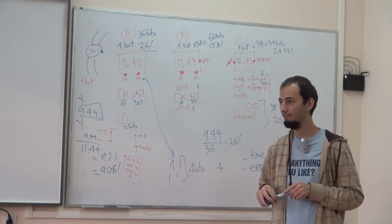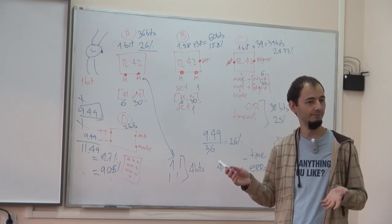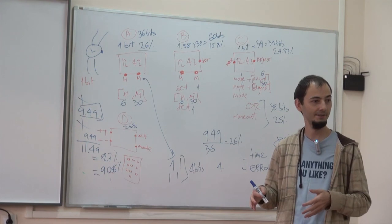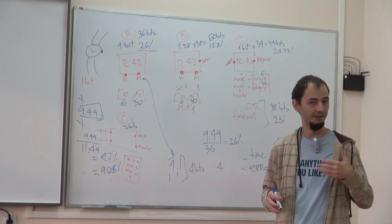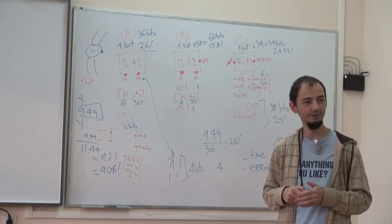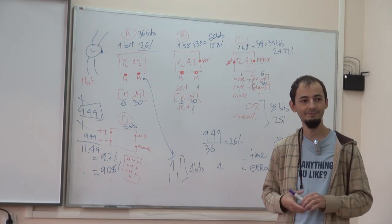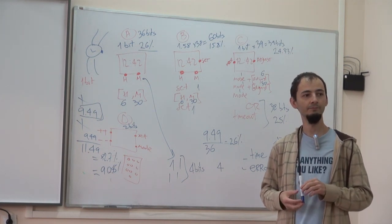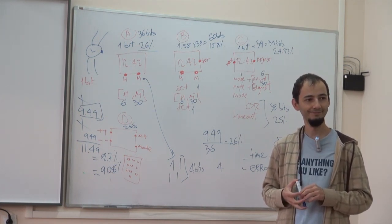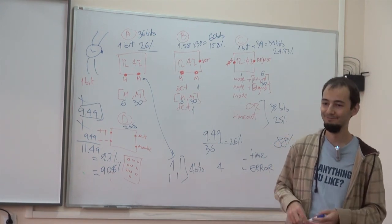So today we encountered two things that seem unrealistic: an efficiency above 1 in the press-and-hold design, and an efficiency of exactly 1 in the analog watch rotation case. These require further thought — possibly accounting for flaws in our calculations or the challenge of quantifying continuous mechanical actions. If there are no further questions, we can finish this class.